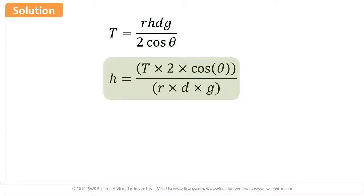The relevant equation for surface tension is T = RHDg upon 2 cos θ. Rearranging this equation, we get H = (T × 2 × cos θ) upon (R × D × G).